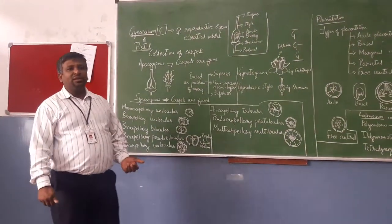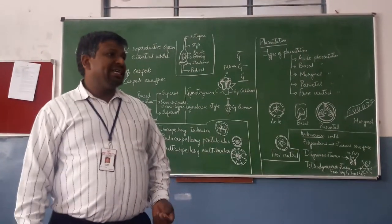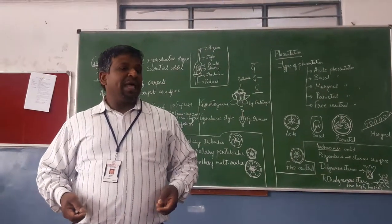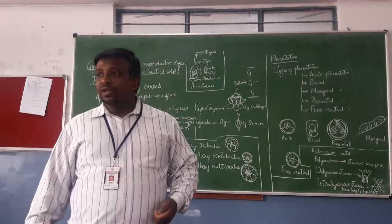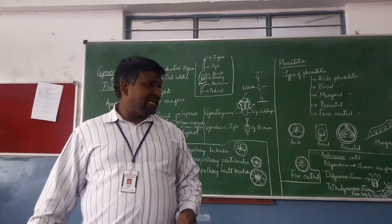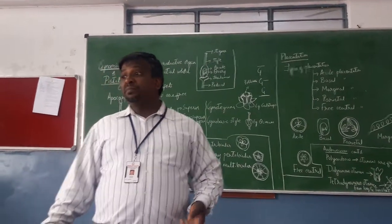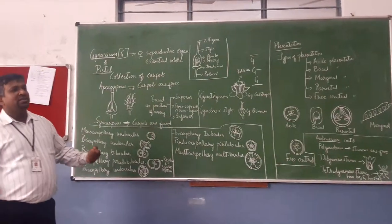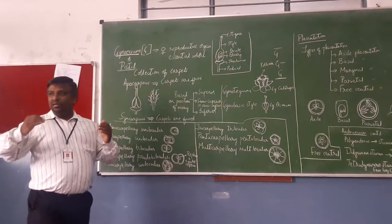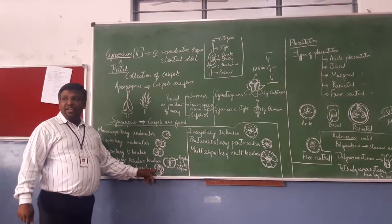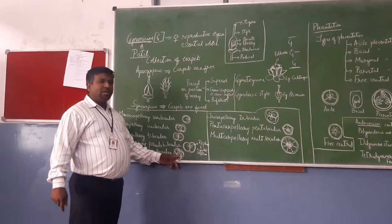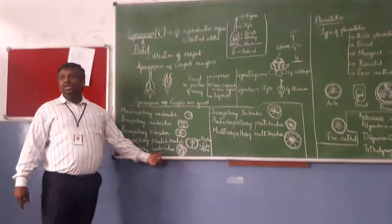Bicarpellary unilocular — you can notice this in cucumber. Cucumber is considered the least nutritious fruit; if you are planning to diet, you can take a lot of cucumber. The most nutritious fruit is avocado (butterfruit), which has omega fatty acids. In cucumber, they are tricarpellary but there is no septum to divide them into three locules — instead, seeds arise from the periphery, so we also call it parietal placentation. It is tricarpellary unilocular in case of cucumber.